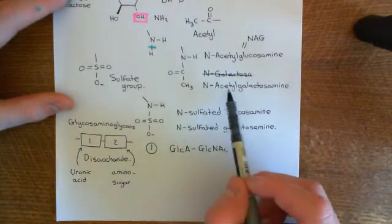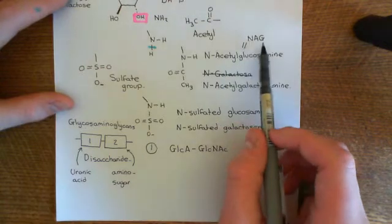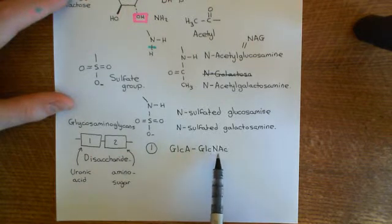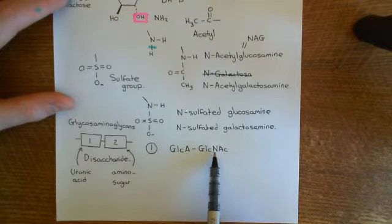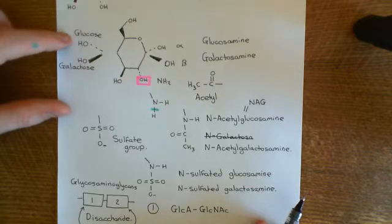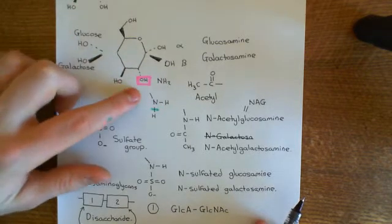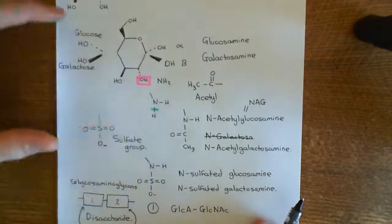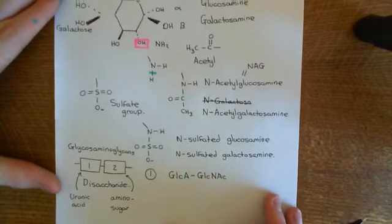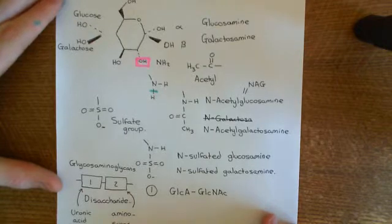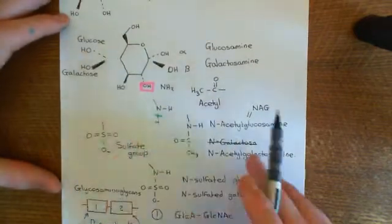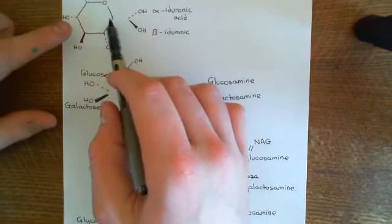Using NAG is confusing and unhelpful, because if you look at N-acetyl galactosamine, it would have those same initials. It's better to use GlcNAc — GLC meaning glucose, N for the amino group, and acetyl. Basically, you've got glucose, and then on the second carbon you've got an amino group which has an acetyl group bound to it. That's what you've made to produce this disaccharide, and you've linked the two together via a glycosidic bond formed by a condensation reaction.